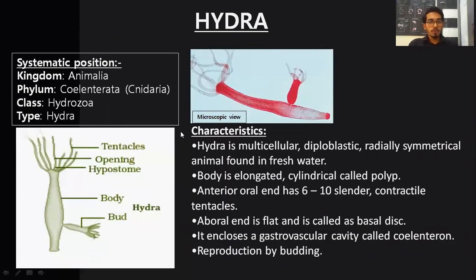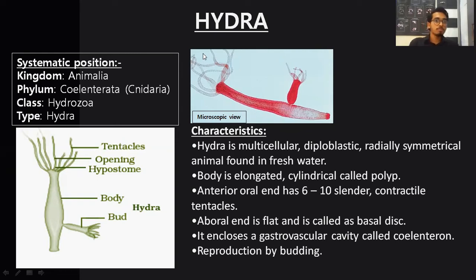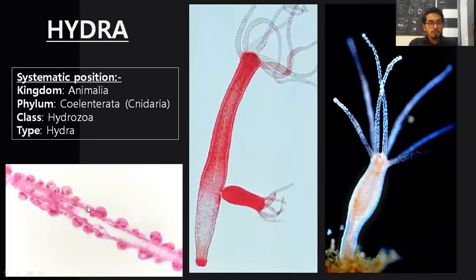Characteristics of hydra: hydra is a multicellular, diploblastic, radially symmetrical animal found in freshwater. Its body is elongated and cylindrical and is called a polyp. The anterior, oral end has 6 to 10 slender contractile tentacles — you can observe these finger-like projections. They help in grabbing its prey. If you observe the tentacle view, there are certain cells called cnidoblast or nematocyte.